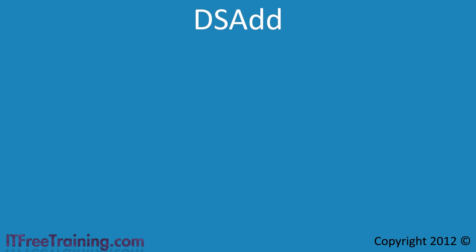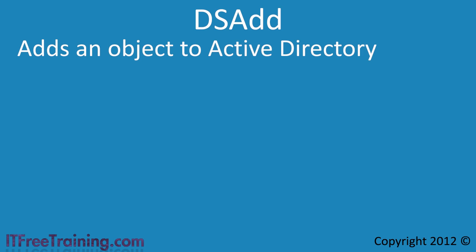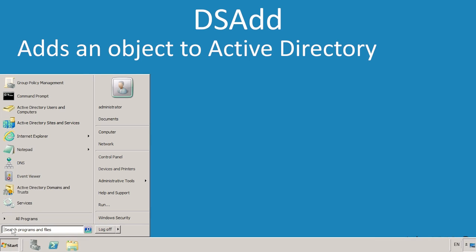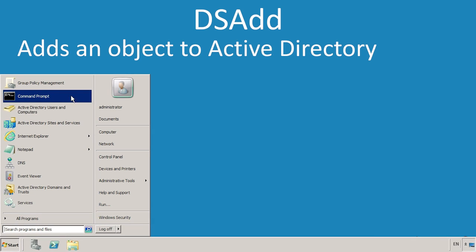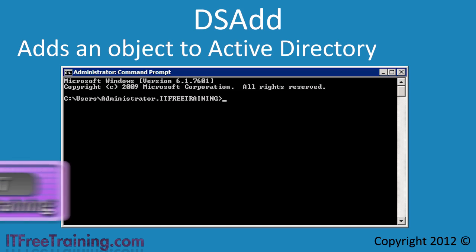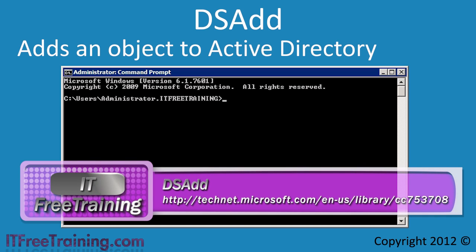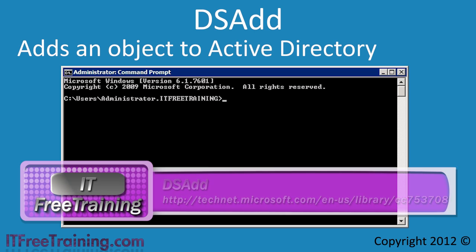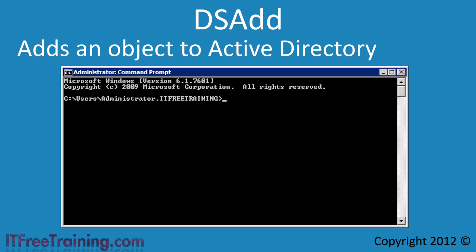The first command line tool I want to look at is dsadd. This command allows you to add users, computers, computer groups, and other Active Directory objects using the command line. I will first open a command prompt from the start menu. dsadd can be used to add many different object types to Active Directory. I will first add a user to the domain.